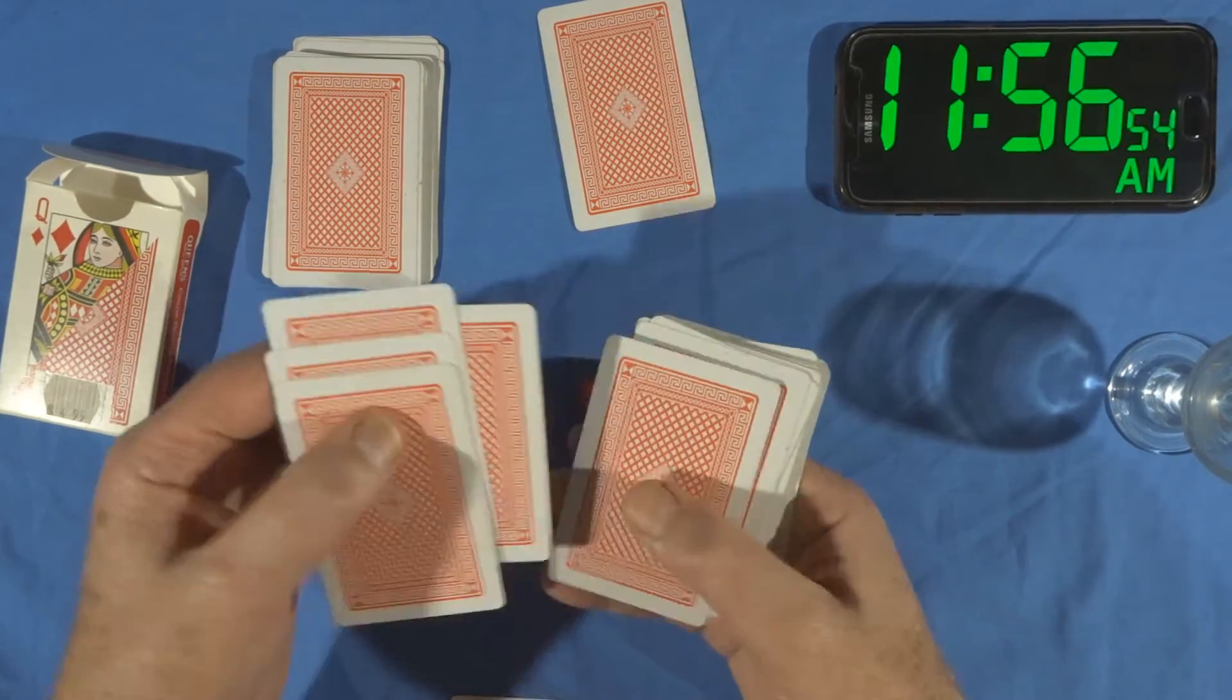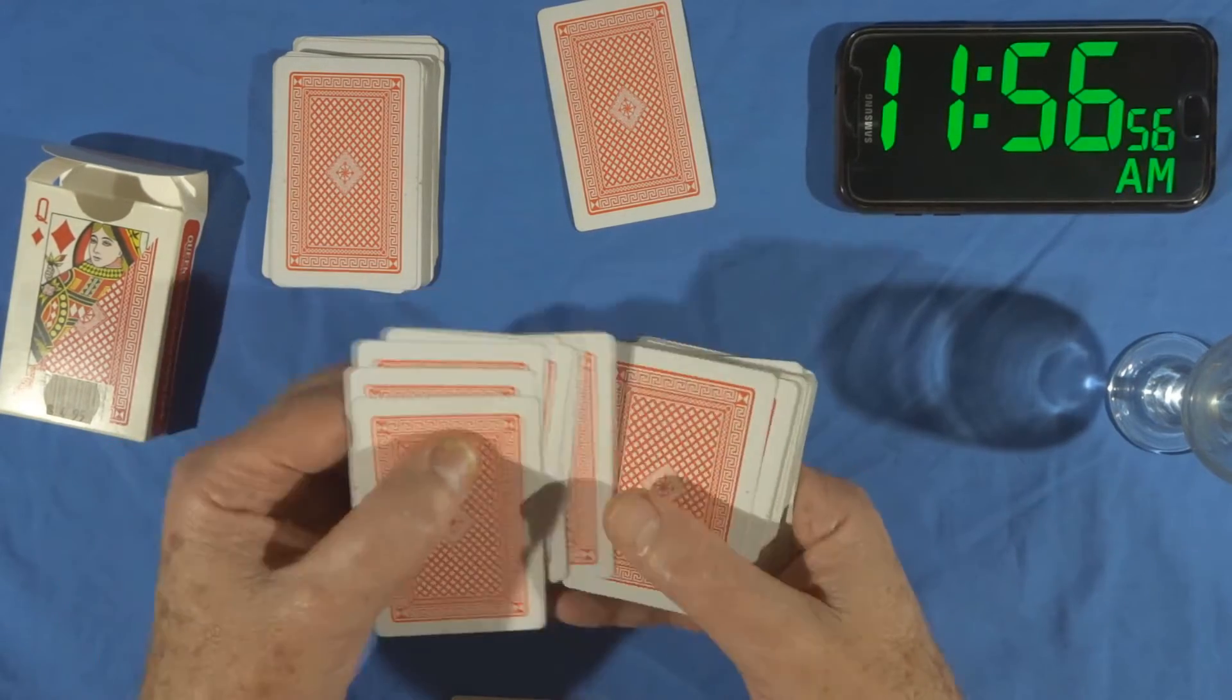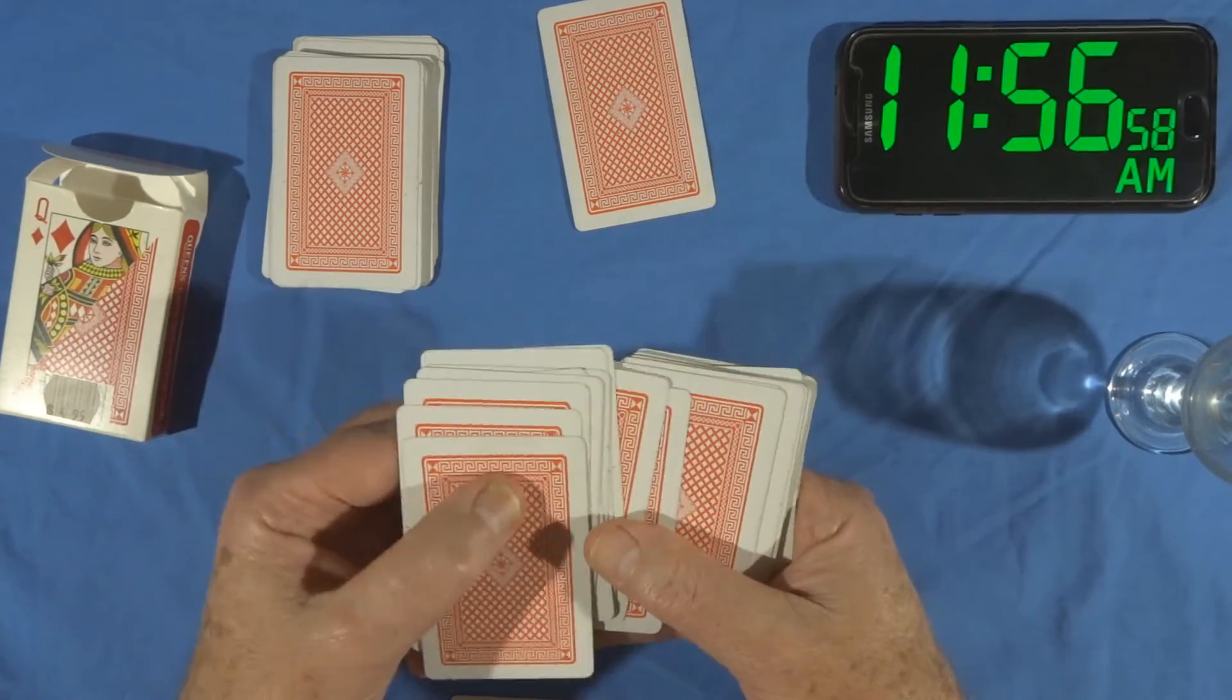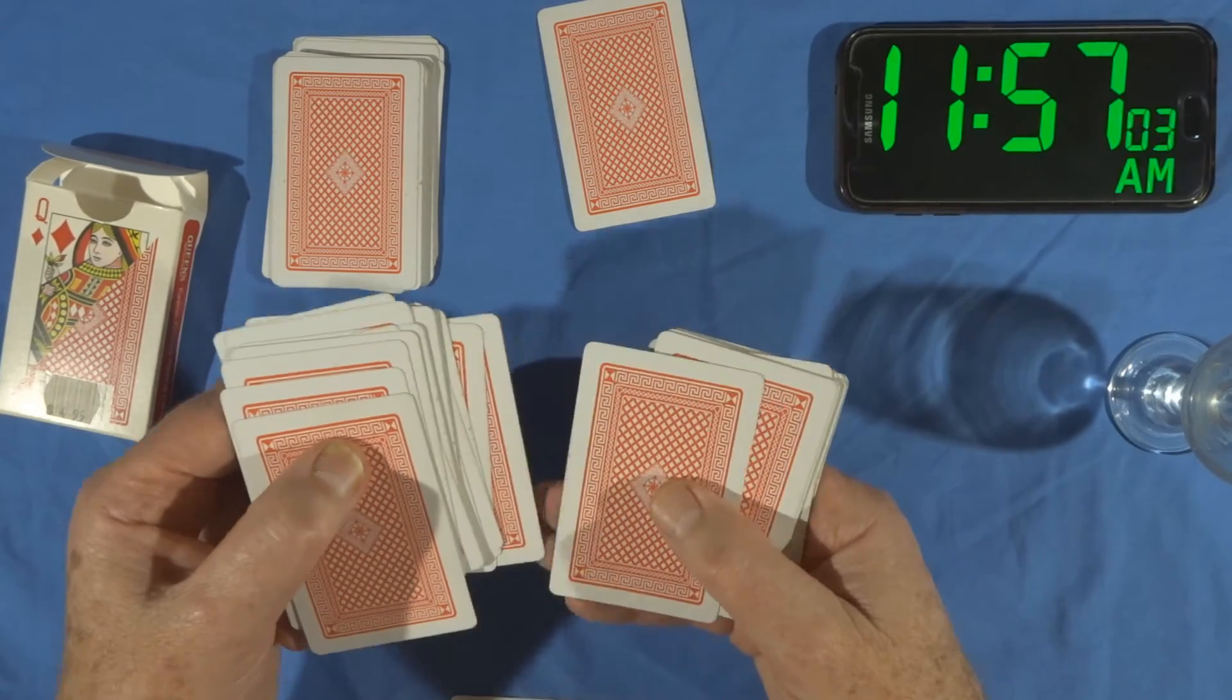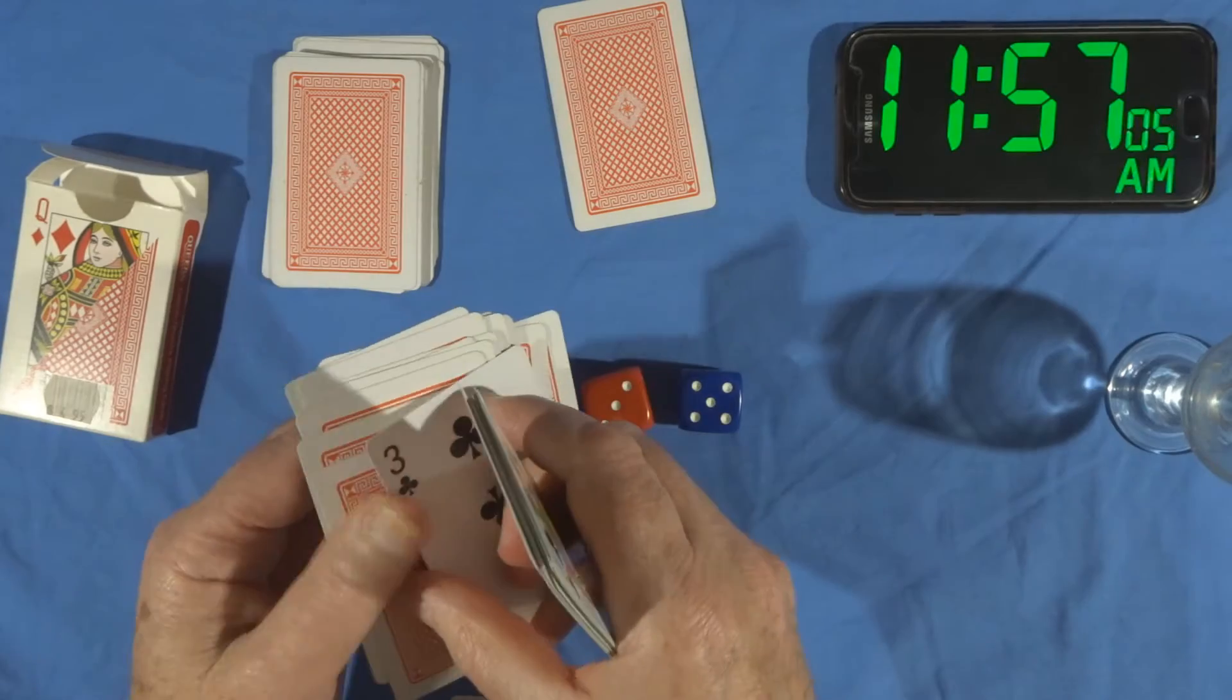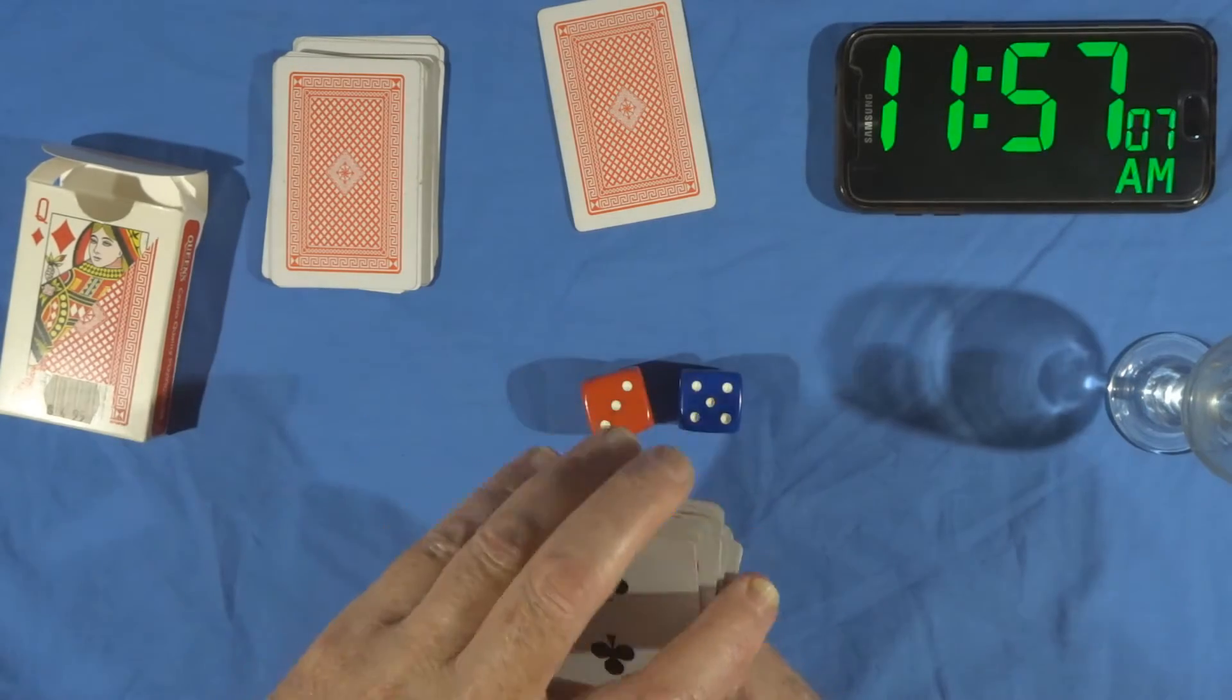One, two, three, four, five, six, seven, eight, nine, ten, eleven, twelve, thirteen, fourteen, fifteen and that's the sixteenth card. So we'll put that on top.